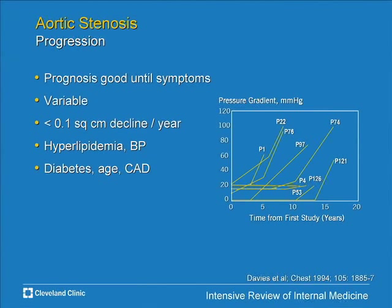The most important predictors of long-term outcome are left ventricular function — if depressed, outcome is poor without intervention — and symptom onset, which dramatically worsens prognosis. Data show that all-cause mortality, cardiac death, and sudden death are all much worse once symptoms develop. The main indication for intervention in aortic stenosis is onset of symptoms.